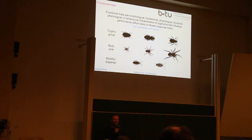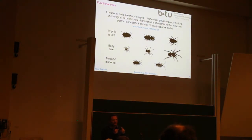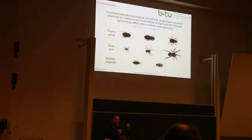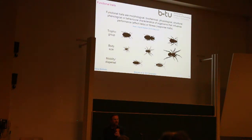So when you look at a whole community — not just counting species but assigning traits to all of them and looking at the presence and dominance of certain traits — you can create a much better mechanistic link to why communities respond to certain land use pressures and how this relates to the functions they perform. That's the core idea of my presentation.